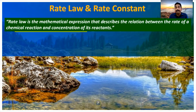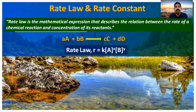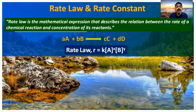For our example — a moles of A reacting with b moles of B to form c moles of C and d moles of D — the rate law is: R = k[A]^x [B]^y, where k is the proportionality constant, also called the rate constant or velocity constant. Note that x and y may or may not be equal to the stoichiometric coefficients a and b.